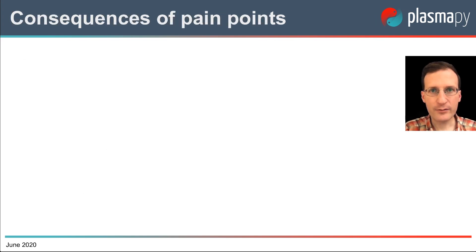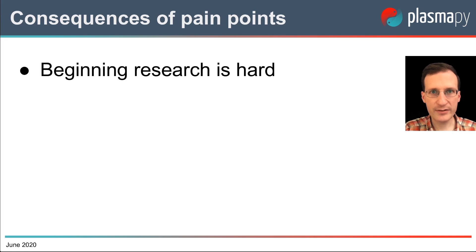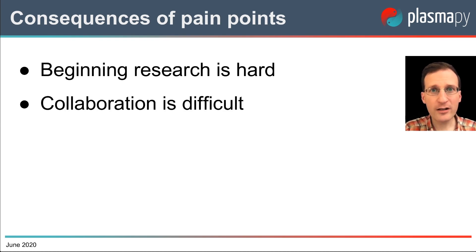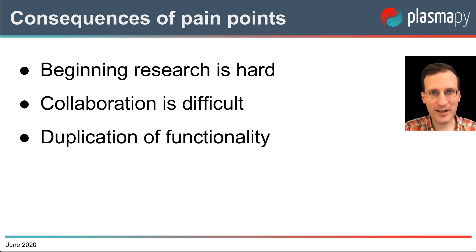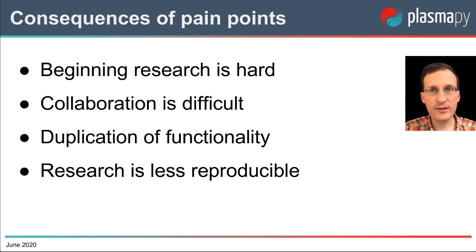These pain points have consequences. It's harder to begin plasma physics research when you have to write your own routines to read and analyze data sets, or use code without documentation that someone else wrote. It becomes harder to collaborate when the software used by a different group is not compatible with your own. Without a shared framework, we frequently rewrite code that others have already written, leading to frequent duplication, triplication, and quadruplication of functionality. When the code used for a paper is not openly available, our research becomes less scientifically reproducible. And the combination of these pain points sometimes makes scientific research pretty frustrating.